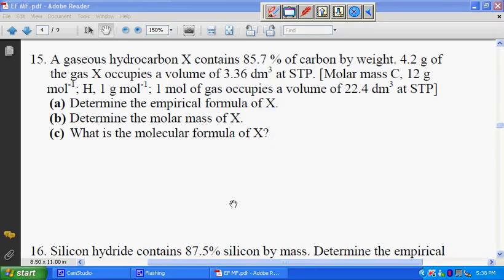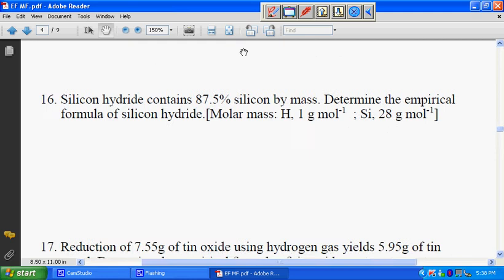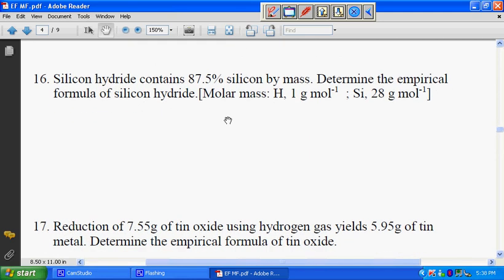Let's look at question 16. Silicon hydride has 87.5% silicon by mass. Determine the empirical formula of silicon hydride.